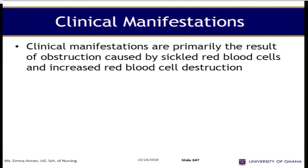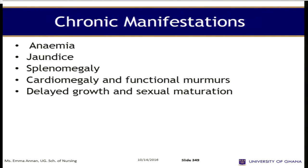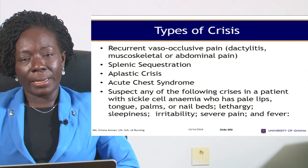Clinical manifestations are primarily the result of obstruction caused by sickle red blood cells and increased red blood cell destruction. Manifestations include anemia, shortness of breath, dizziness, headache, coldness of the hands and feet, palpitation, weakness, irritability, cough, aneurysm, joint pains, jaundice, pain, hematuria, bacterial sepsis, and priapism. Chronic manifestations include anemia, jaundice, spleen enlargement, heart enlargement, and delayed growth and sexual maturation.